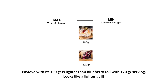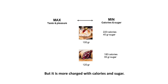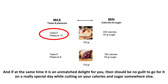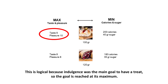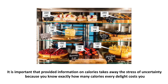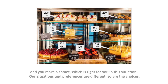Pavlova with its 100 gram serving is lighter than a blueberry roll with a 120 gram serving — looks like a lighter guilt. But it is more charged with calories and sugar. And if at the same time it is an unmatched delight for you, then there should be no guilt to go for it on a really special day while cutting calories and sugar somewhere else. This is logical because indulgence was the main goal. It is important that provided information on calories takes away the stress of uncertainty — you know exactly how many calories every delight costs you and you make the choice which is right for you.